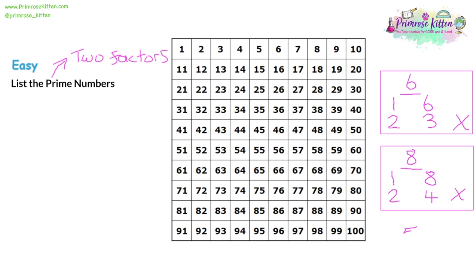Now I'm going to look at five, checking every single number. Five divided by one is five, so one and five are factors. Five divided by two is two and a half — we don't allow decimal numbers, so that's not a factor. Five divided by three and four similarly don't work. Then five divided by five — I'm repeating myself, so I've finished my list. Five has exactly two factors, so five is a prime number.